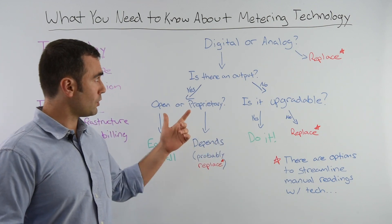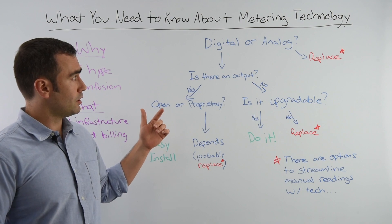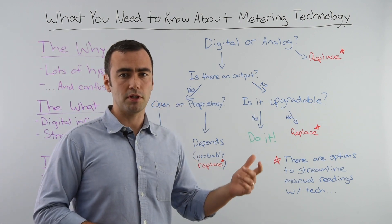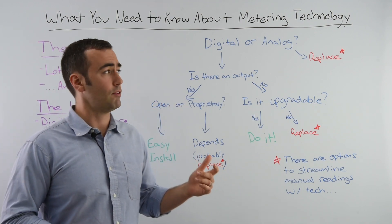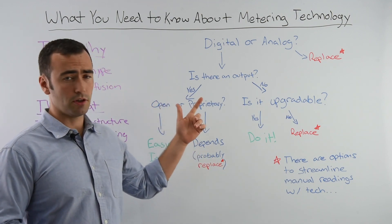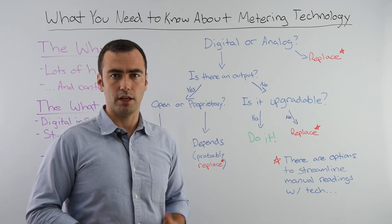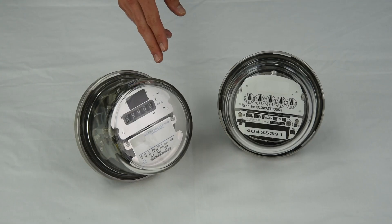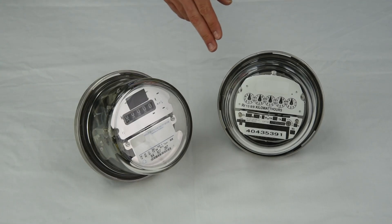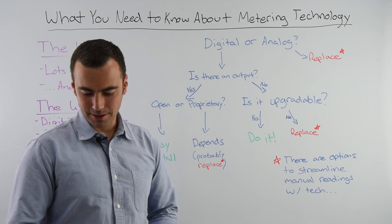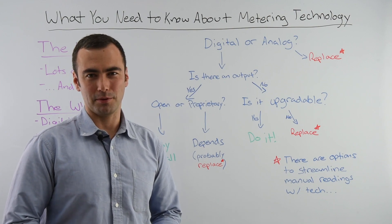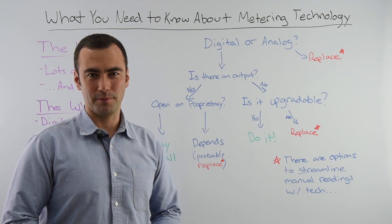First you need to determine whether the meters that you have are digital or analog. If your meters look like this, these are analog meters and we'll talk about them towards the end of the video.